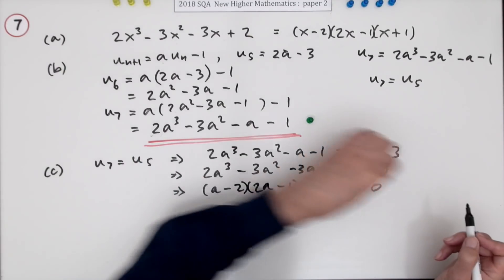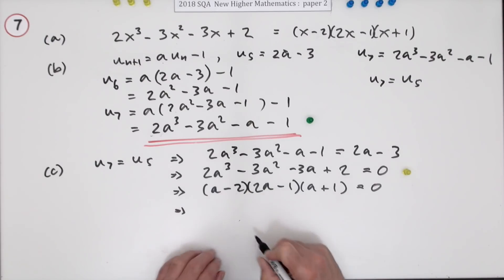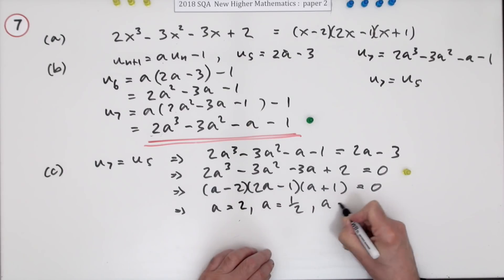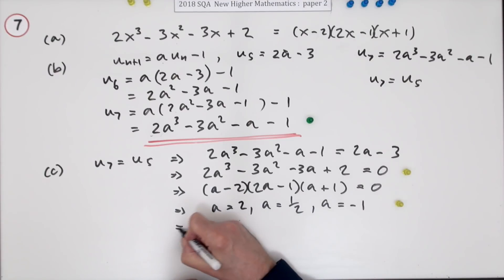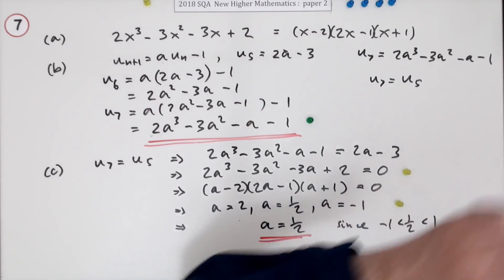2a minus 1 and a plus 1 is equal to 0. So rearranging it, equating and rearranging it gets a mark. Don't quite get a mark now. You get a mark when you solve that. So that means that a is either equal to 2 or a half or negative 1. Now that is worth a mark. Then, you can't have all three answers because it said it had a limit. So there's only one answer which is a half. And give the reason. Since a half is between 1 and negative 1 because it's a proper fraction. Gets a mark.